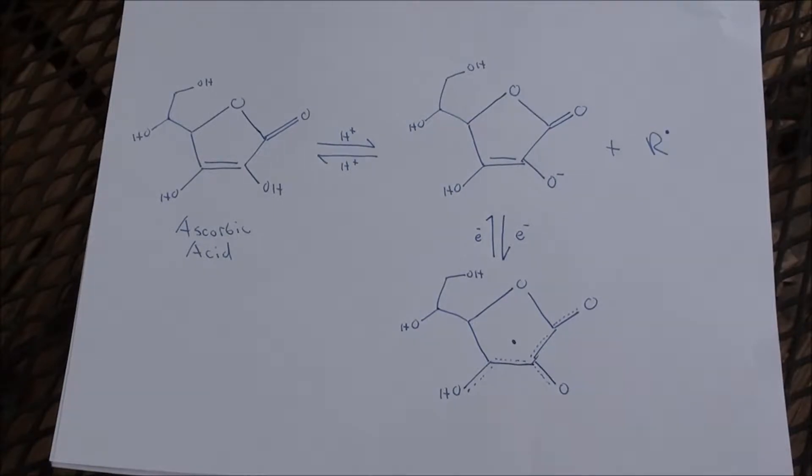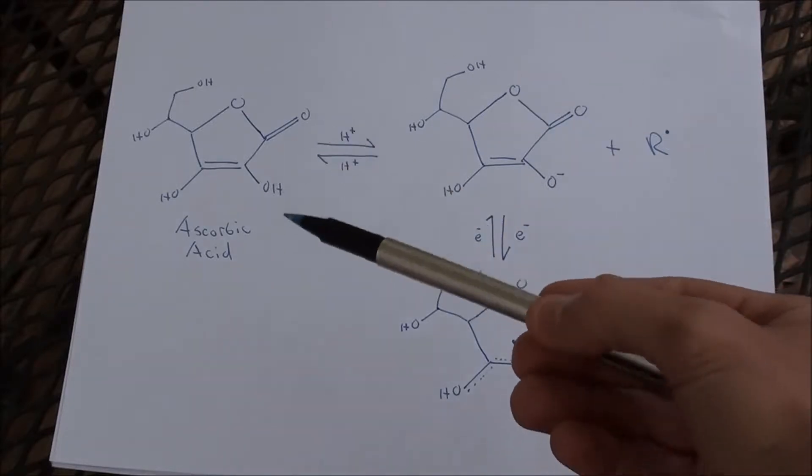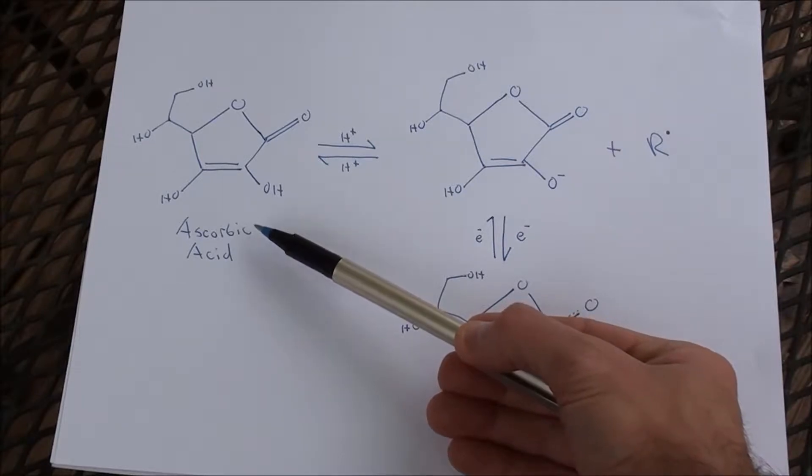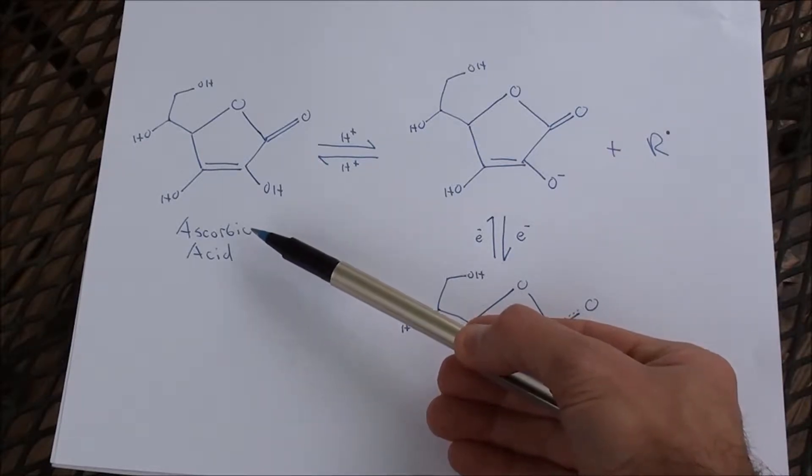Okay, as promised, here's the chemistry of vitamin C, and it's got some really unique properties that make it a powerful antioxidant. So first of all, here's the structure of vitamin C. It's called ascorbic acid.